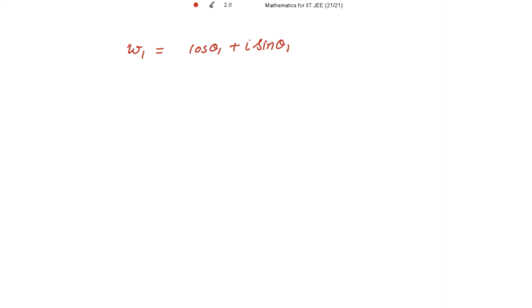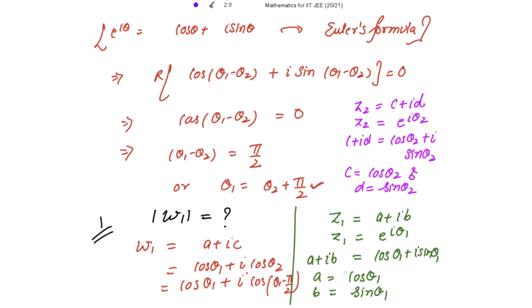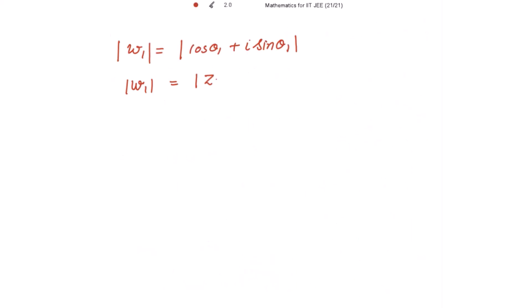Since we need mod of w1, taking mod on both sides: mod of w1 equals mod of (cos theta 1 plus iota sine theta 1), which is z1. So mod of w1 equals mod of z1, and since it is given that mod of z1 equals 1, we get mod of w1 equals 1.